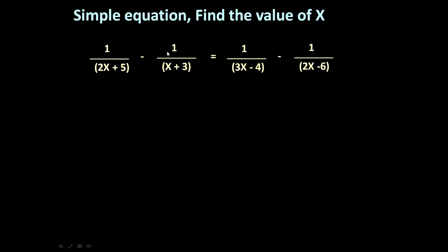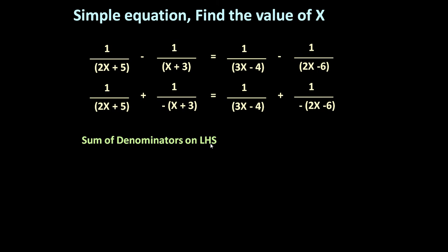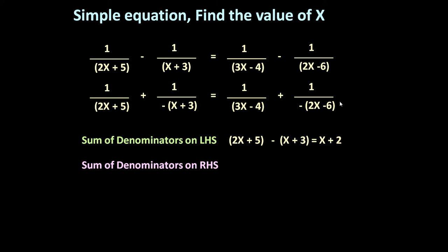Find the value of x: 1 upon 2x plus 5 minus 1 upon x plus 3 is equal to 1 upon 3x minus 4 minus 1 upon 2x minus 6. Rearranging the equation by moving the minus terms across, the sum of denominators on the left-hand side is 2x plus 5 minus of x plus 3, which equals x plus 2. The sum of denominators on the right-hand side is 3x minus 4 minus of 2x minus 6, which is again x plus 2.